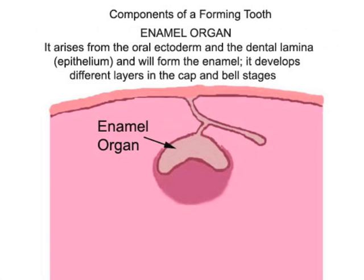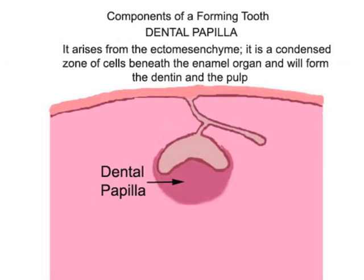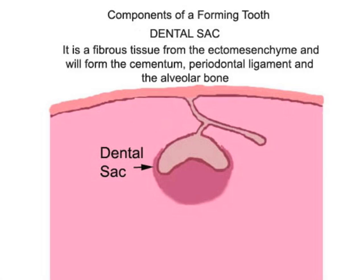There are three components of a forming tooth. The enamel organ arises from the oral ectoderm and the dental lamina and will form the enamel; it develops different layers in the cap and bell stages. The dental papilla arises from the ectomesenchyme — it is a condensed zone of cells beneath the enamel organ and will form the dentin and the pulp. The dental sac is a fibrous tissue from the ectomesenchyme and will form the cementum, periodontal ligament, and alveolar bone.